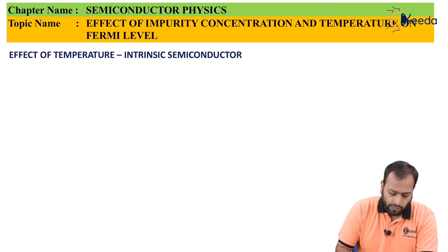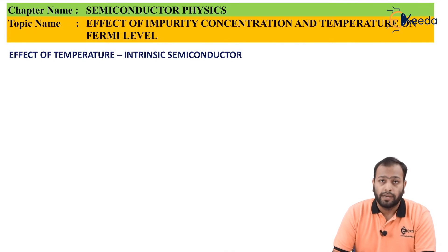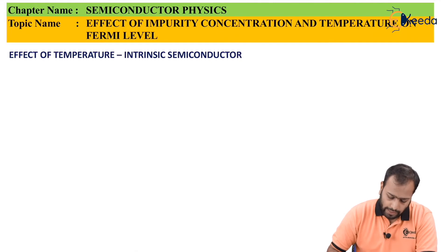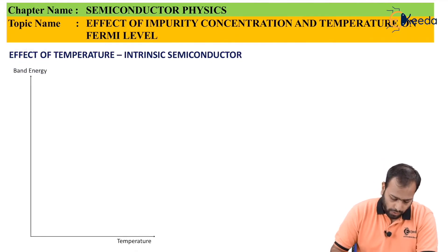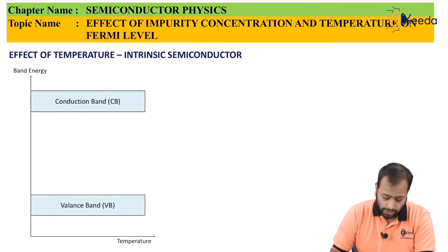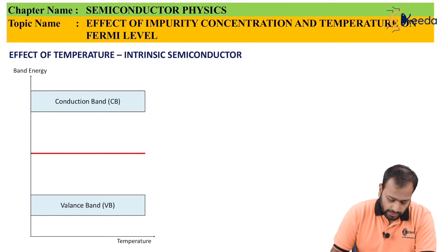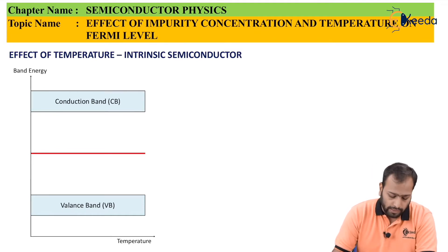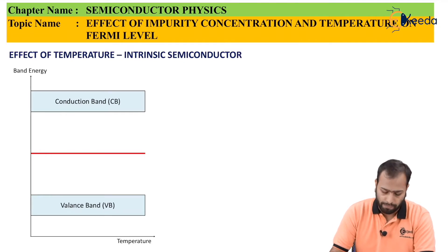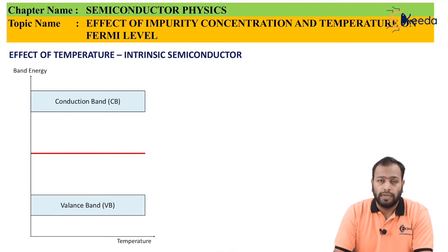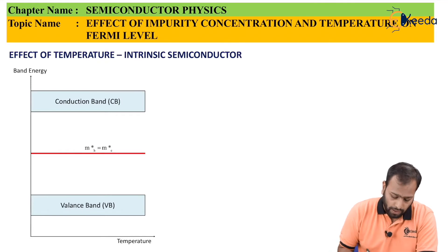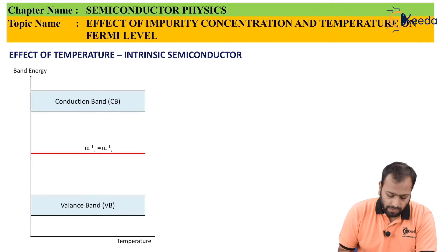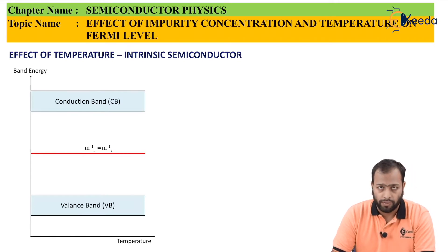Let's talk about the effect of temperature on an intrinsic semiconductor. By intrinsic, it means a pure semiconductor without any doping. Taking the band diagram, we have the valence band and the conduction band. This is the intrinsic semiconductor's Fermi level at 0 Kelvin, which we covered in the previous class — it is always at the midpoint between the valence band and the conduction band. The assumption we make at 0 Kelvin is that mH equals mE, meaning the effective mass of the hole equals the effective mass of the electron.